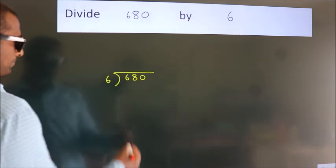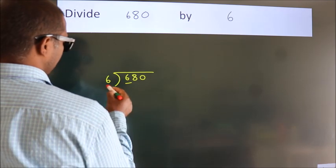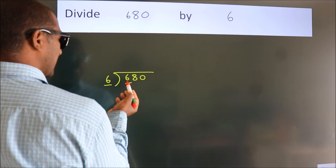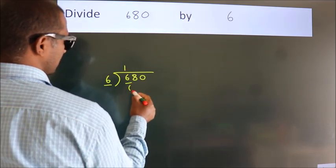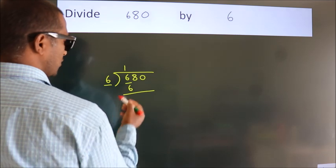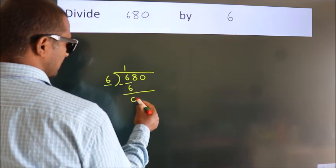Next, here we have 6, here 6. When do we get 6? In 6 table, 6 once, 6. Now, we should subtract. We get 0.